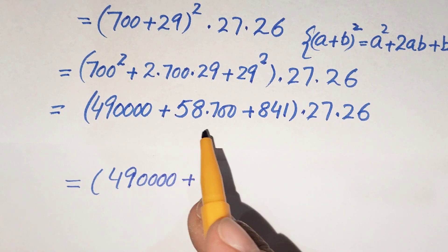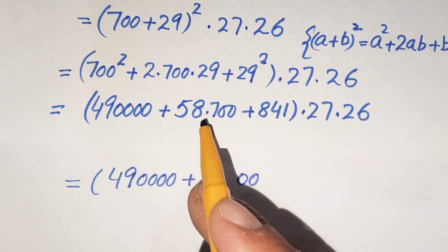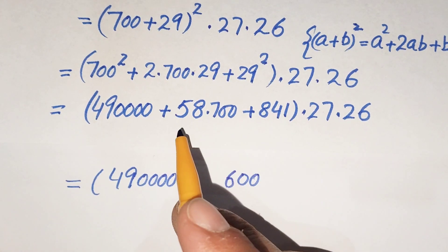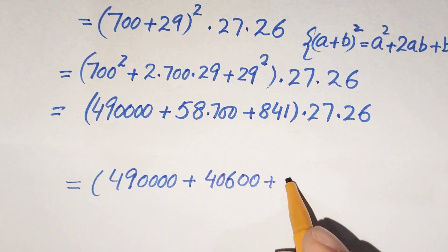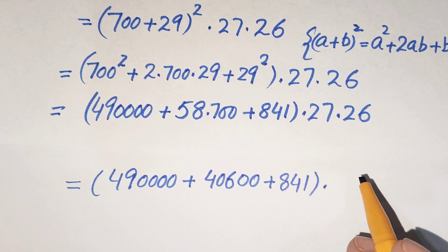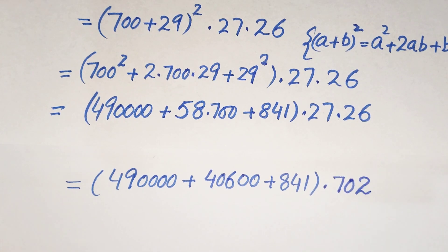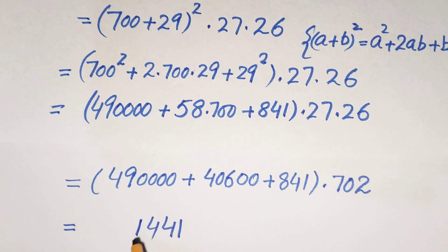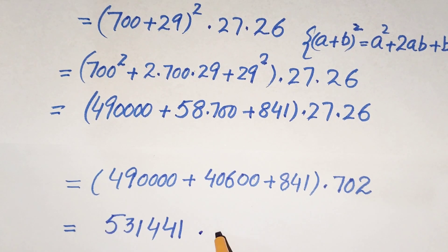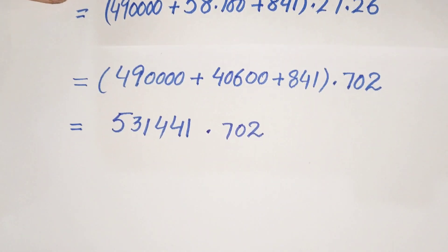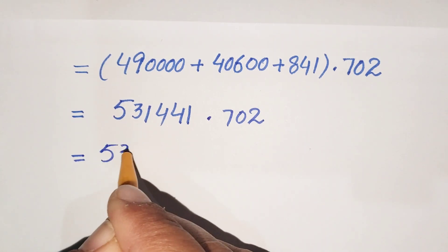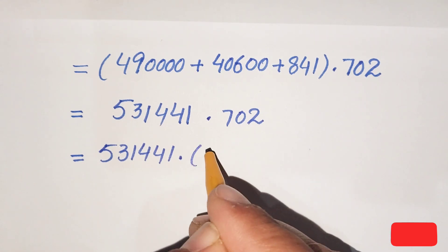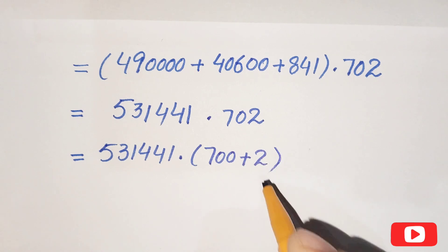Computing the arithmetic: 490,000 plus 40,600 plus 841 equals 531,441. So we now have 531,441 times 27 times 26. Multiplying 531,441 times 26 gives 702, so combined we have 531,441 times 702.